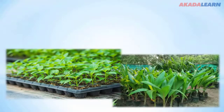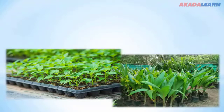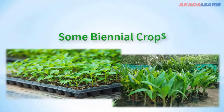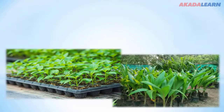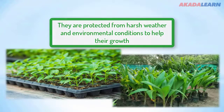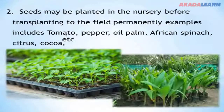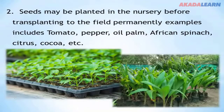This method is known as the nursery method. The plants are taken care of first in a place called the nursery before being taken to the field. Most of the plants that go through this process are perennial crops and some biennial crops. They are not taken to the field immediately — some have to develop before bearing fruit within a year or over a year. Because of that, they are first taken care of to a certain level before being taken out to the field. Examples include tomato, pepper, oil palm, African spinach, citrus, cocoa, and many more.